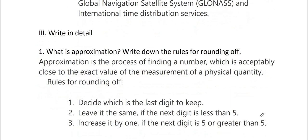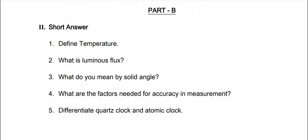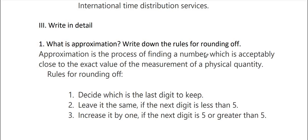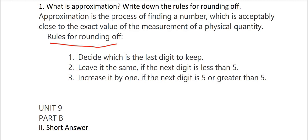Okay, that's it. Next one. Write in detail, what is approximation? Write down the rules for rounding off. Approximation is the process of finding a number which is acceptably close to the exact value of the measurement of a physical quantity. Rules of rounding off: decide which is the last digit to keep. Leave it the same if the next digit is less than 5. Increase it by 1 if the next digit is 5 or greater than 5.